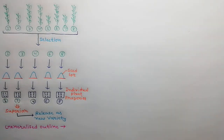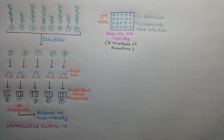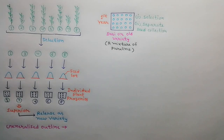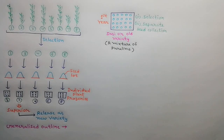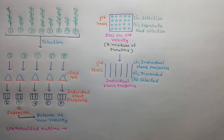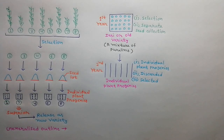We can elaborate the pure line selection method by a generalized outline. In the first year, 200 to 2000 superior plants are selected from a genetically variable population, which may be a desi or old variety that is a mixture of pure lines. Seeds are collected separately from each selected plant. In the second year, these seeds are grown separately to produce individual plant progenies. Inferior and undesired progenies are discarded, while superior and desired progenies are selected.